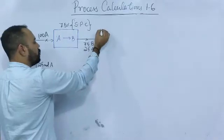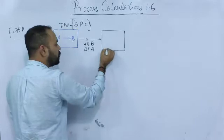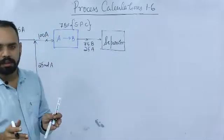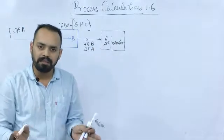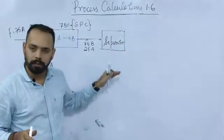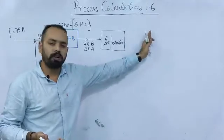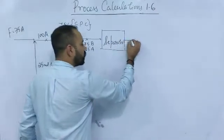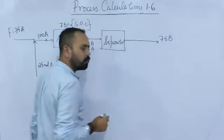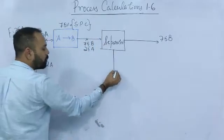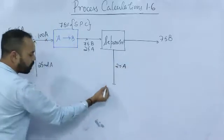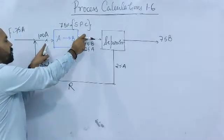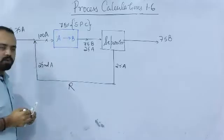The product from the reactor is sent to the separator. The separator separates A and B — sometimes completely, giving pure B in one stream and pure A in the other; sometimes you get a mixture of A and B in each stream, depending on the question. In this case, all moles of B are separated and the 25 moles of A remaining are recycled. This is the recycle stream.